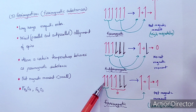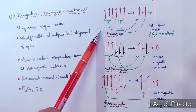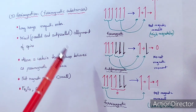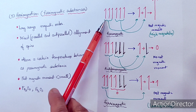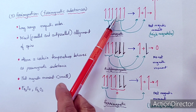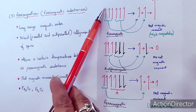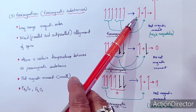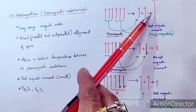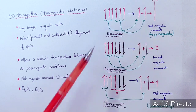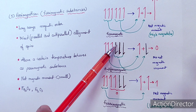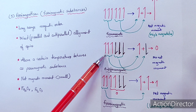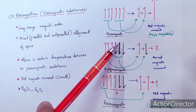Now we can compare these three kinds of long-range magnetic order. In ferromagnetic material, after applying the magnetic field all spins align in the same direction — all spins are parallel — so the spin magnitudes add up and the net magnetic moment is very large. In antiferromagnetic material, with six spins as example, three spins point in one direction and three in the opposite direction.